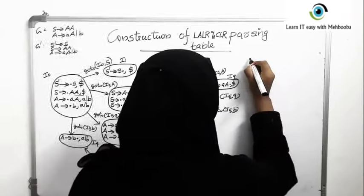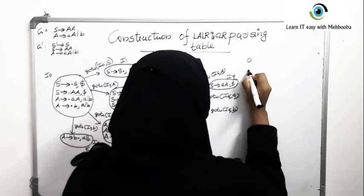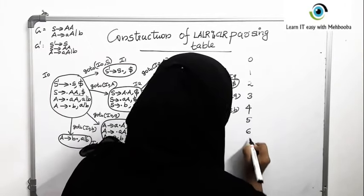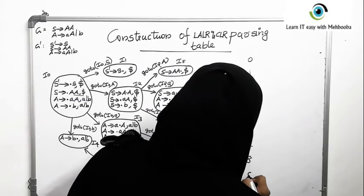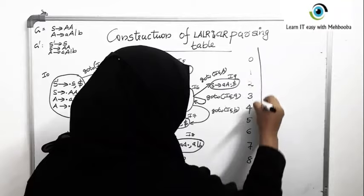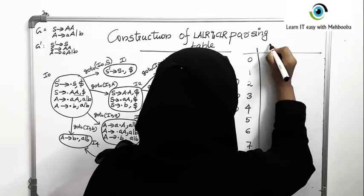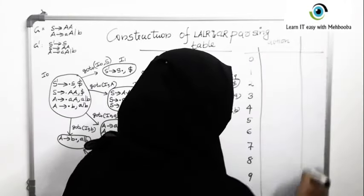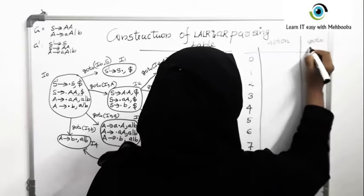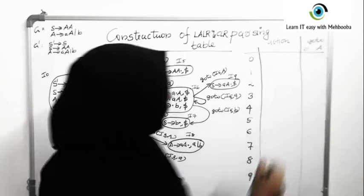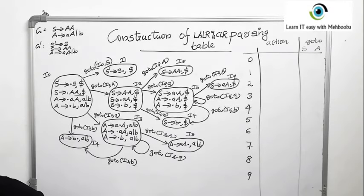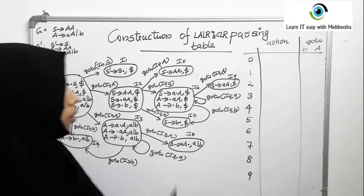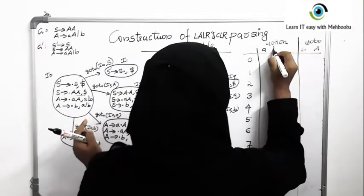Now we construct the parsing table, which is similar to SLR. We have states 0 through 9 — 10 states total. The table has an action part and a goto part. The action part is for terminals: a, b, and dollar. The goto part is for non-terminals: S and A.